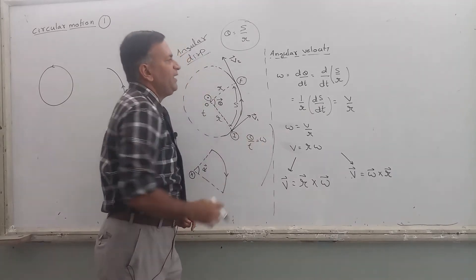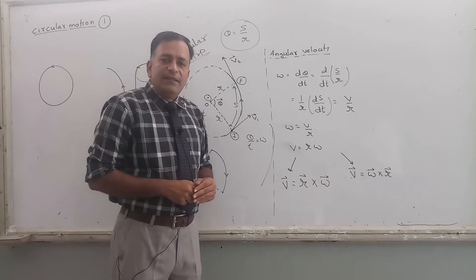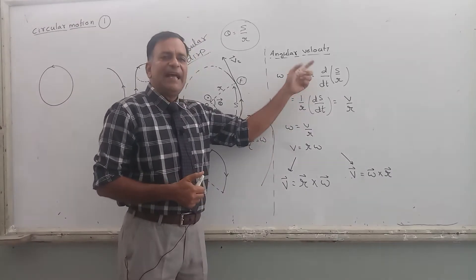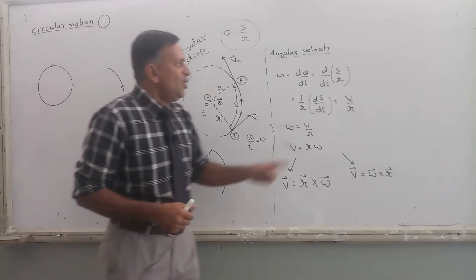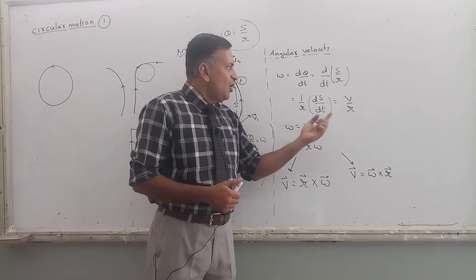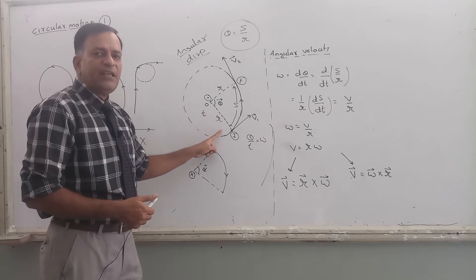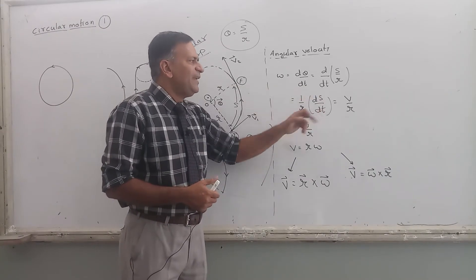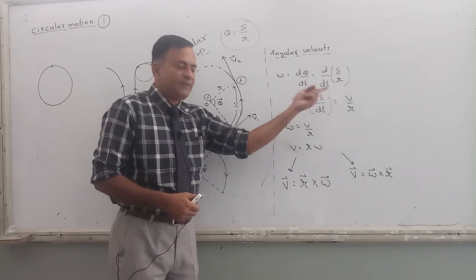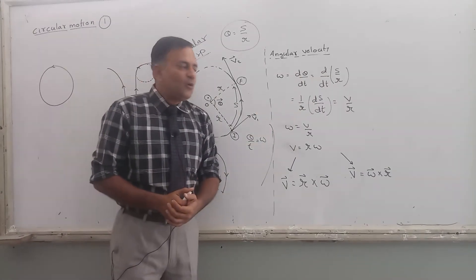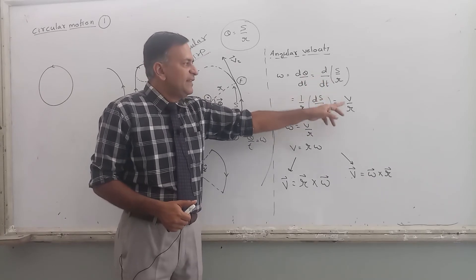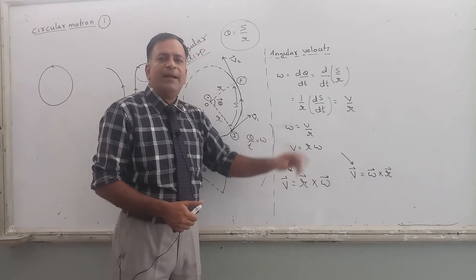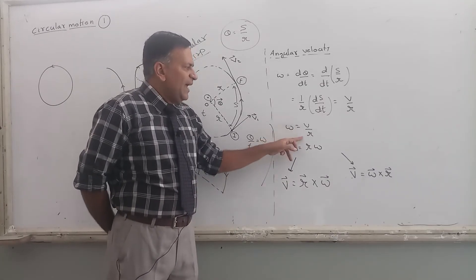Now, omega = theta/t. By definition, omega = dθ/dt. Since theta = arc/radius = s/r, and radius is constant, we can take r outside the differentiation. So omega = (1/r)(ds/dt). Now ds/dt is the linear velocity v. Therefore omega = v/r, or equivalently v = r·omega. This is the scalar relation.